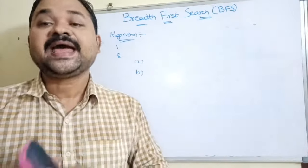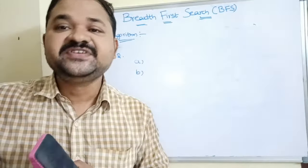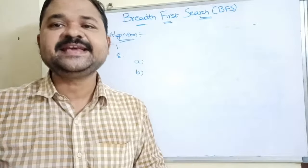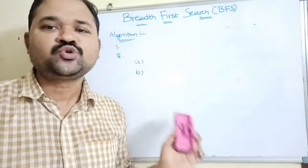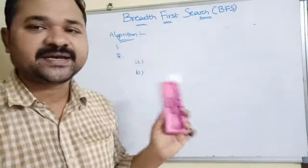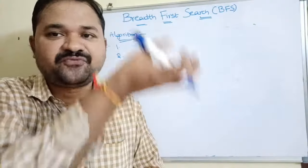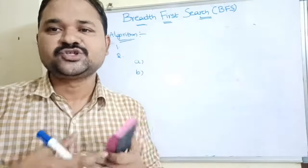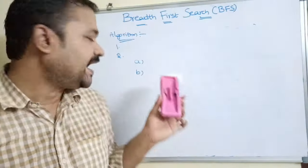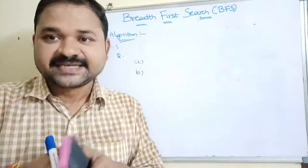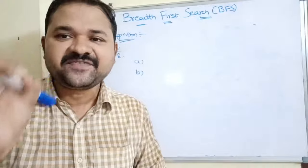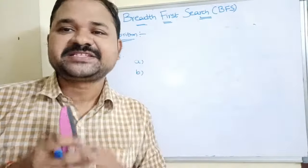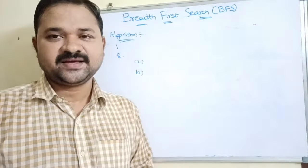The second part of step two is: insert all the unvisited adjacent vertices of the deleted vertex into the queue and mark their status as visited. So to summarize: while the queue is not empty, delete a vertex from the front end, display it, then enqueue all its unvisited adjacent vertices.